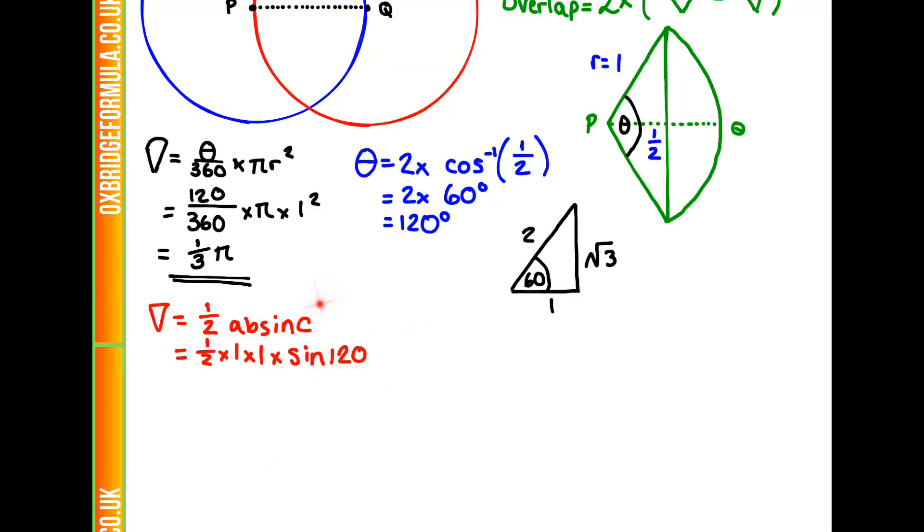We probably don't know what the sine of 120 is, but we can work it out using a sine graph and our trigonometry triangle. If we draw our sine graph here, sine of 120 is going to be at this point, which is 60 away from our 180 degrees there. So to find the equivalent, we need to do 60 from our point here, which is 0. So sine of 120 equals sine of 60.